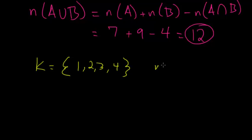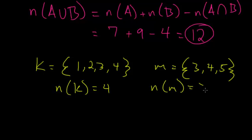And set M which contains 3, 4, and 5. We'd say the number of elements in set K is 4. The number of elements in set M is 3.